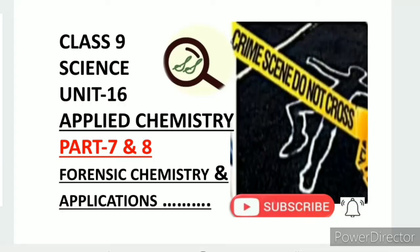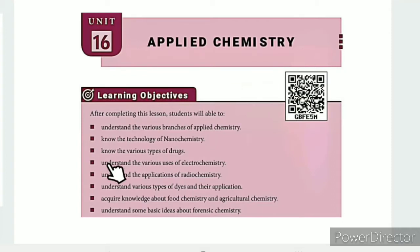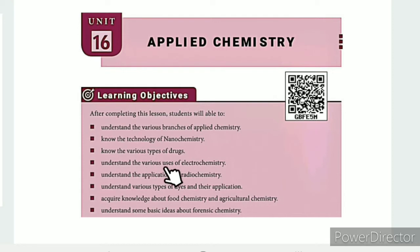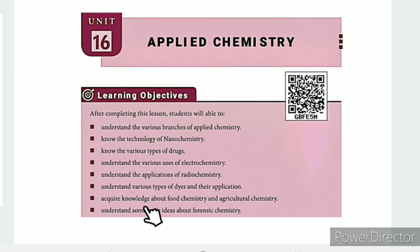Greetings from SS Class 9 Science Unit 16, Applied Chemistry Parts 7 and 8 — Forensic Chemistry and Applications of Applied Chemistry. The lesson-level learning objectives are: understand the various branches of applied chemistry, know the technology of nanochemistry, know the various types of drugs, understand the various uses of electrochemistry, understand the applications of radiochemistry, understand the various types of dyes and their application, acquire knowledge about food chemistry and agricultural chemistry, and understand some basic ideas about forensic chemistry.